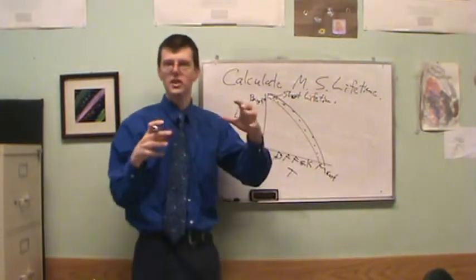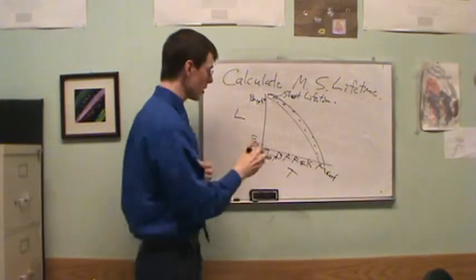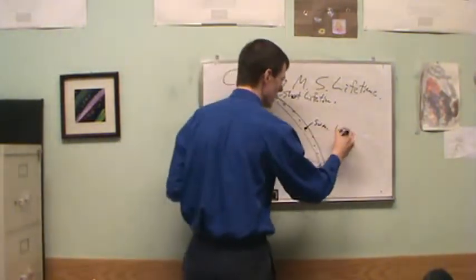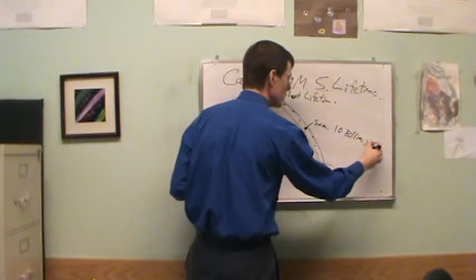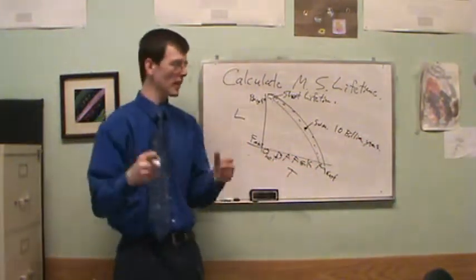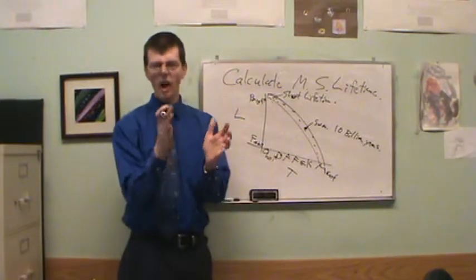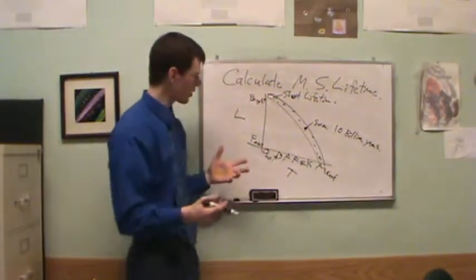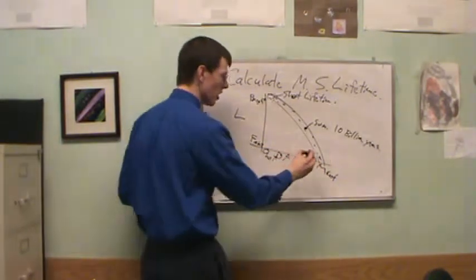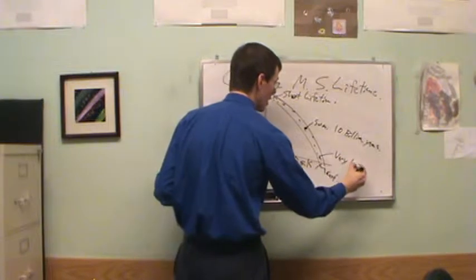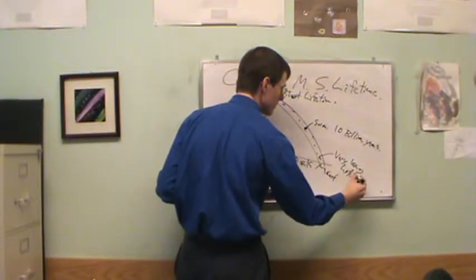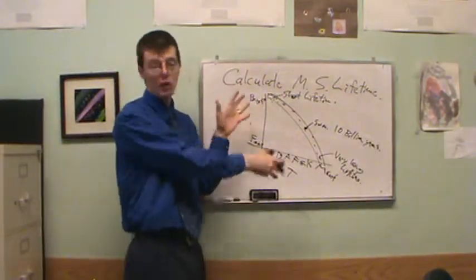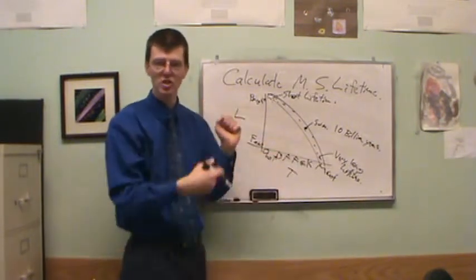As we move down the main sequence to smaller and smaller stars, they burn fuel more and more slowly. Our Sun should have about 10 billion years on the main sequence. We know our solar system is about 4.5 billion years old, so the Sun is about middle-aged. The red dwarf stars — very low luminosity, very cool — will last for an extremely long time.